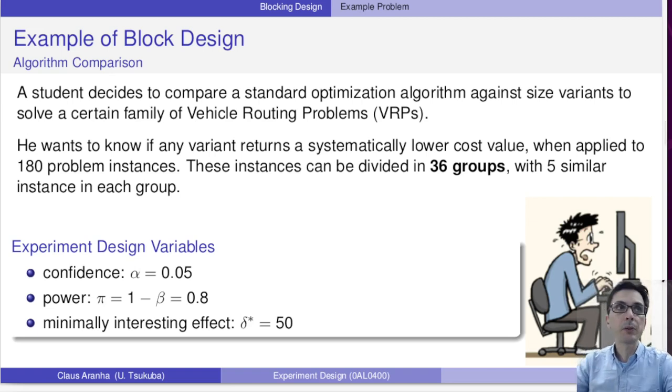Let me give you an example. Let's say that a student decides to compare a standard optimization algorithm against six variants to solve a certain family of vehicle routing problems (VRPs). The student wants to know if any variant returns a systematically lower cost value when applied to 180 problem instances.